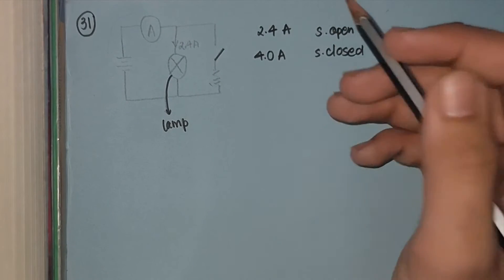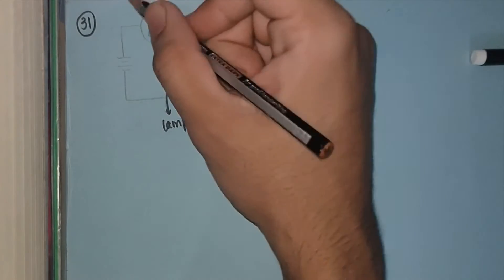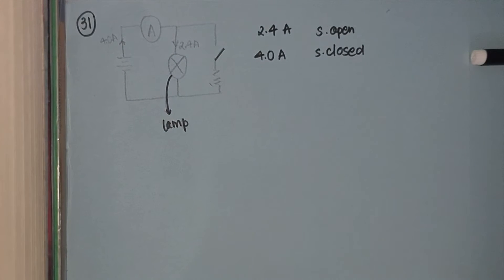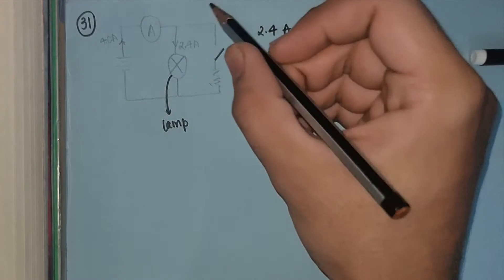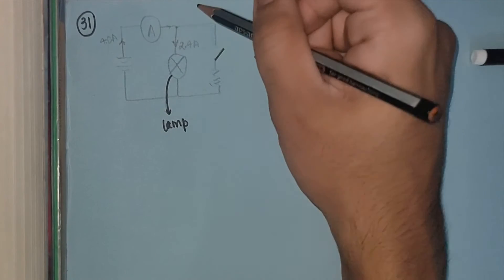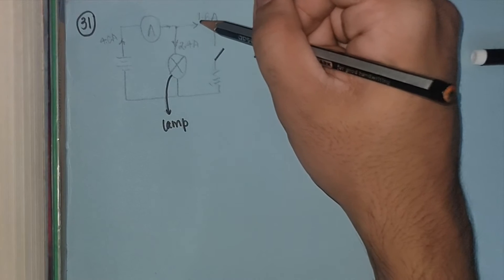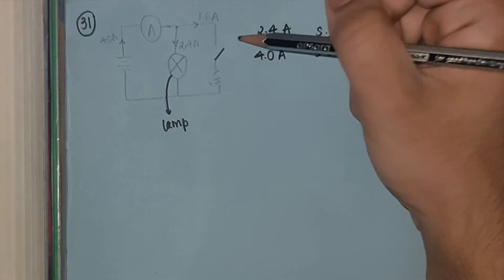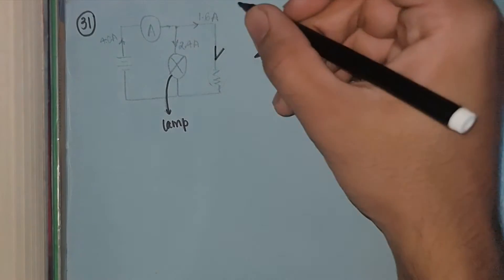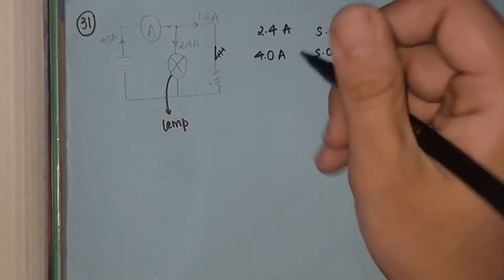When the switch is closed, there is a total current of 4.0 amperes flowing through the ammeter. According to the laws of circuits, at a junction, current gets divided. So 4.0 amperes comes in, 2.4 goes through the lamp, and therefore we get 1.6 amperes through the resistor — which is what the question asks. When the switch is closed, we have 1.6 amperes through the resistor. Our answer is option B.